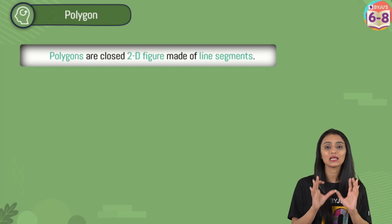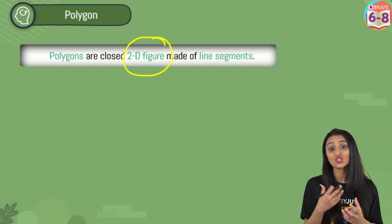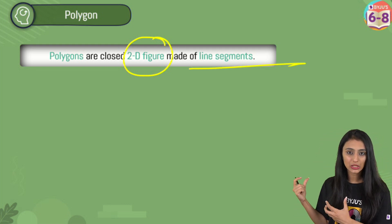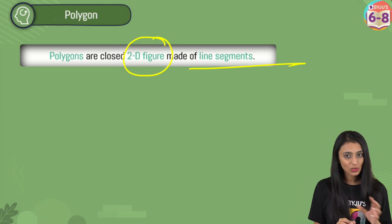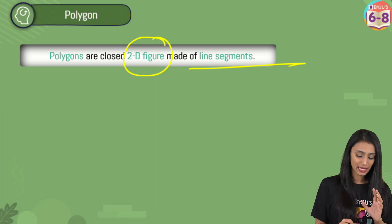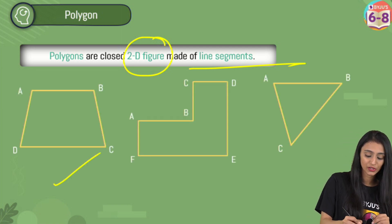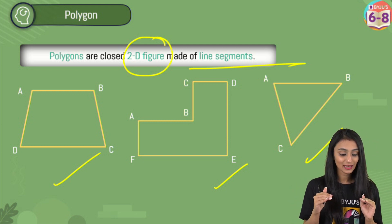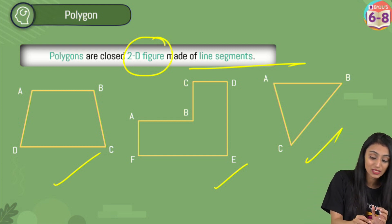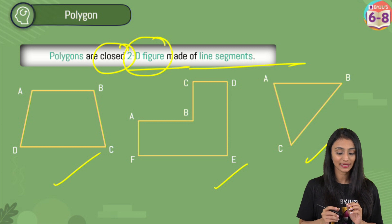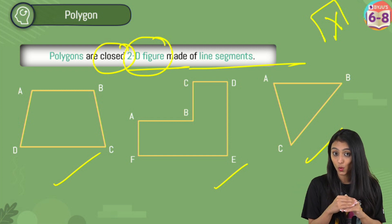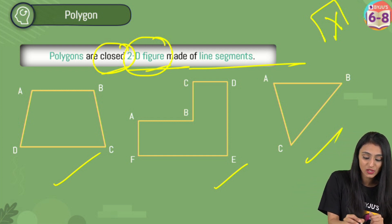So what is a polygon actually? Polygons are basically 2D figures — two-dimensional figures — which are made up of line segments. Each keyword here means something: first, it's a two-dimensional figure; second, it has to be line segments only, no curves. We have ABCD figures here — in all of them we have only line segments, and it is closed. If I have something open like this, it will not be called a polygon, because it is not closed. So all these factors have to be considered.